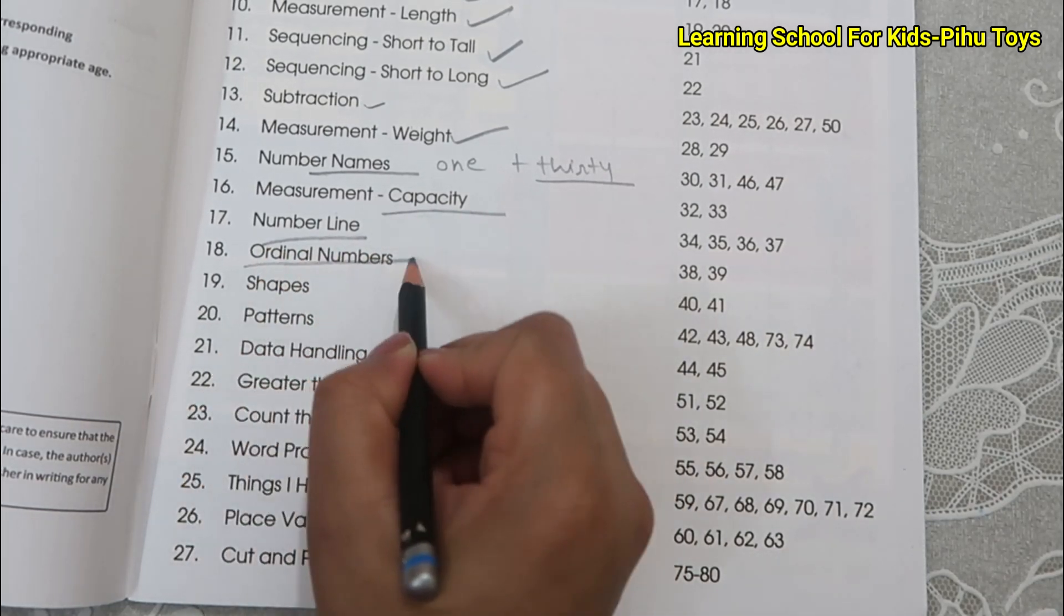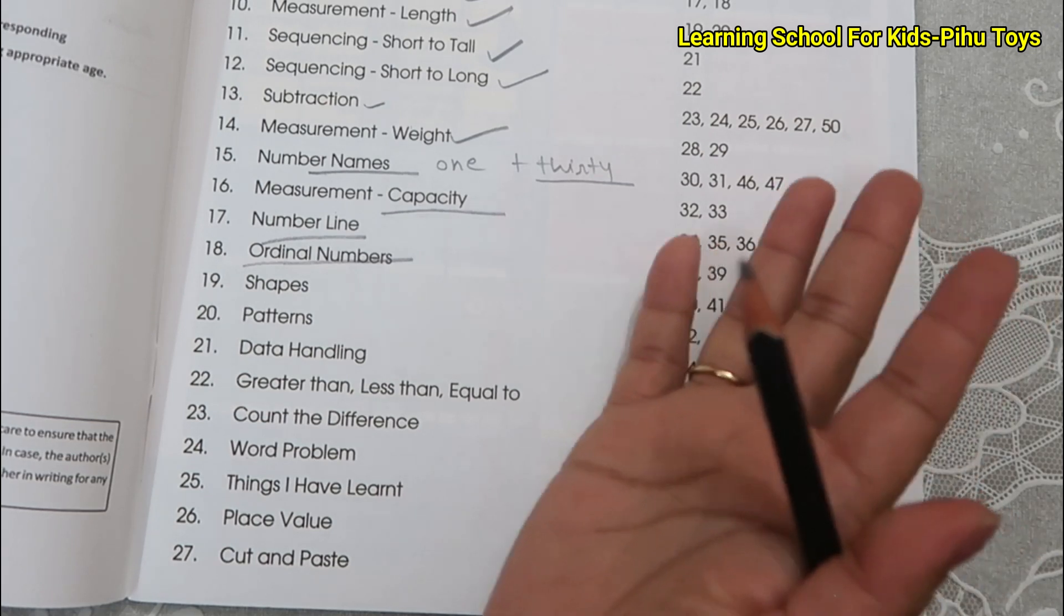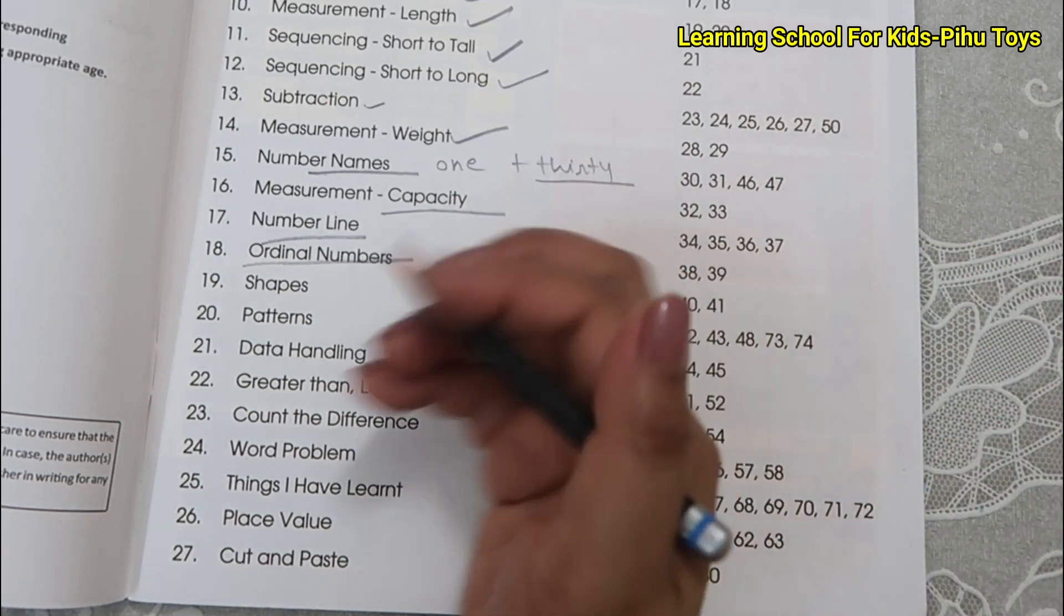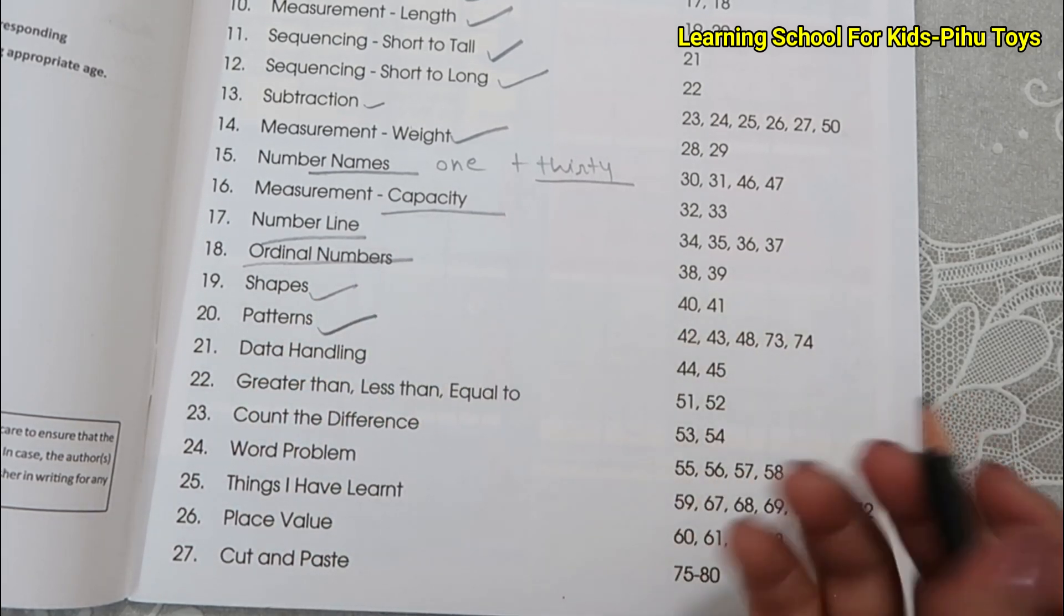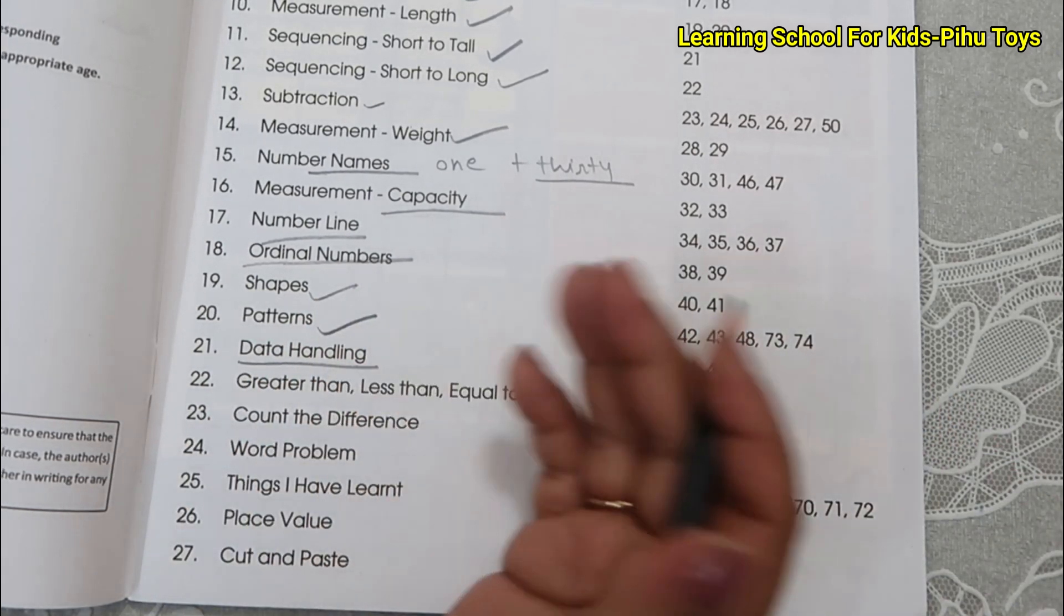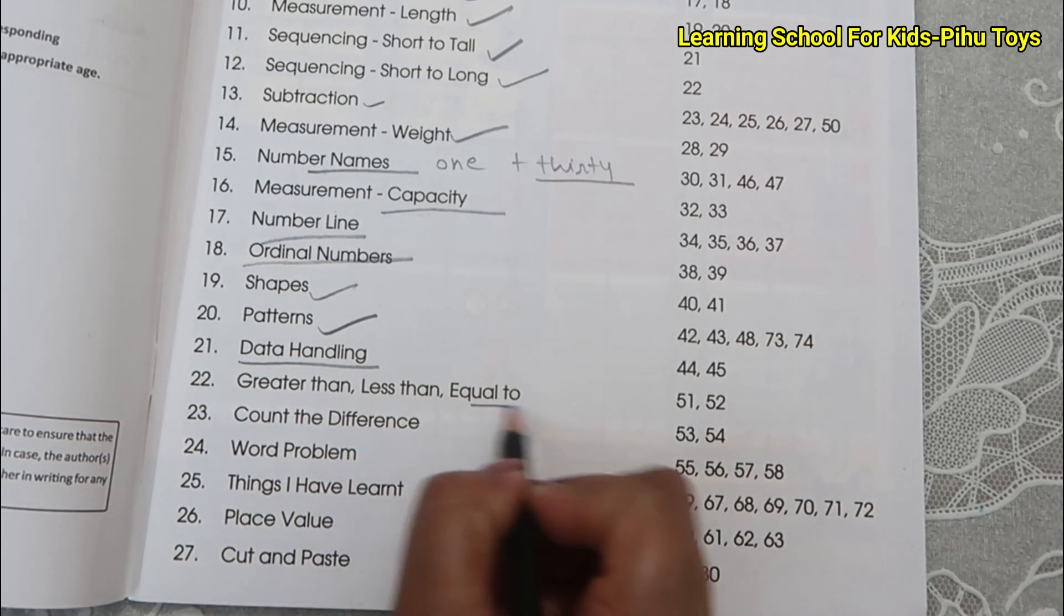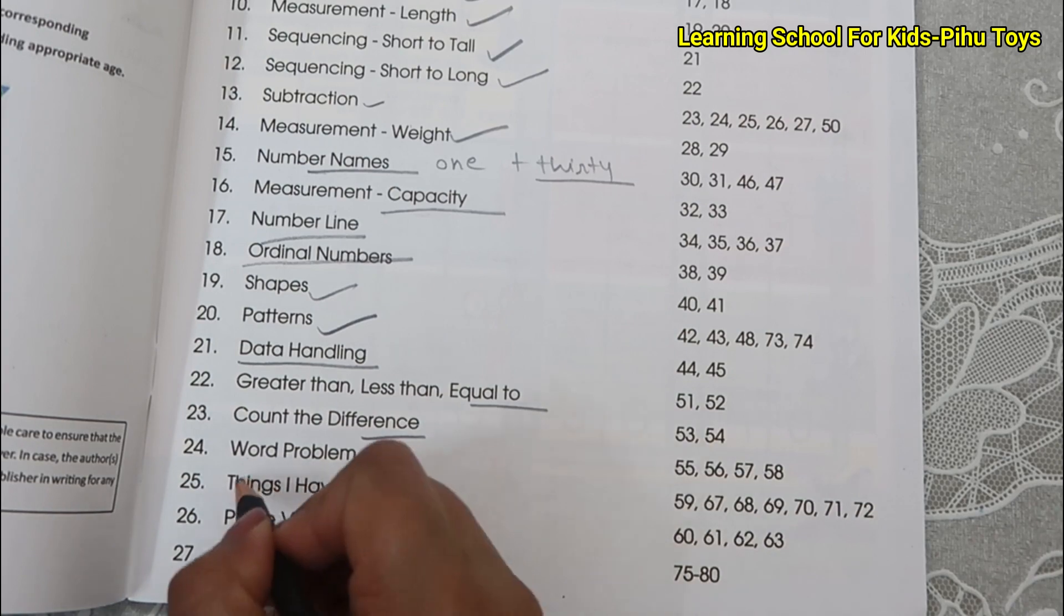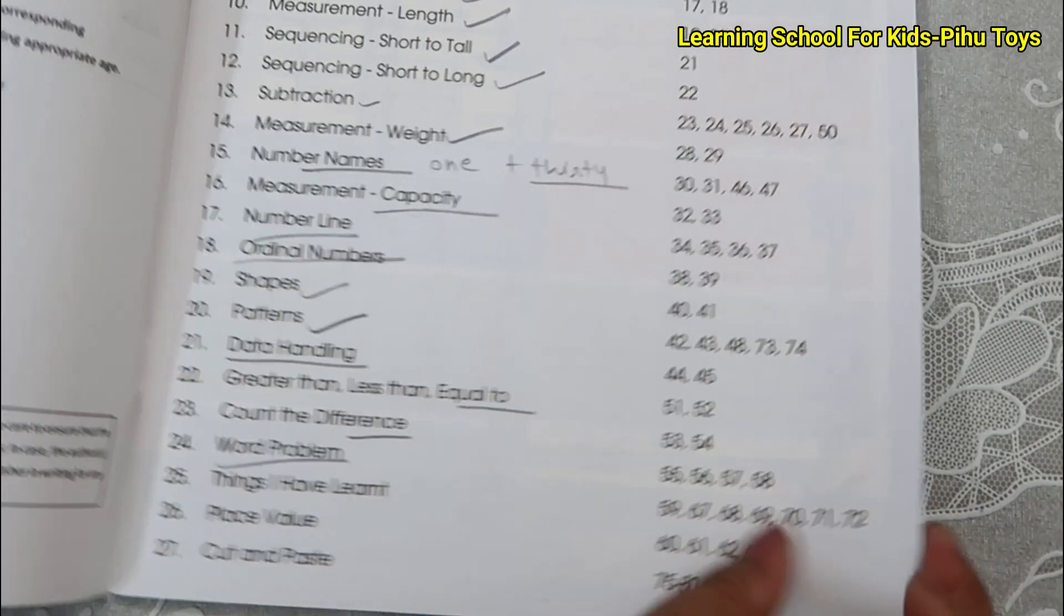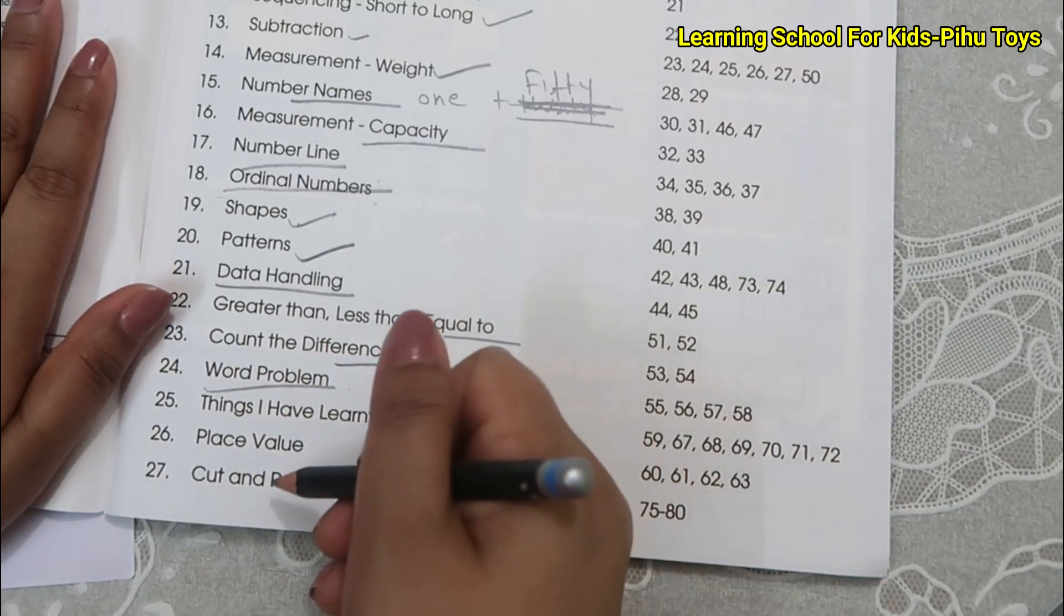Ordinal numbers 1st, 2nd, 3rd, 4th, up to 14th, 20th, then shapes, patterns, data handling or greater than, less than or equal to, count and difference, word problems.